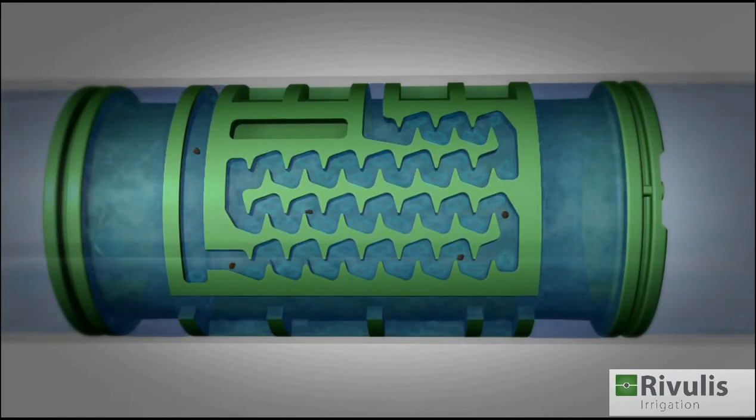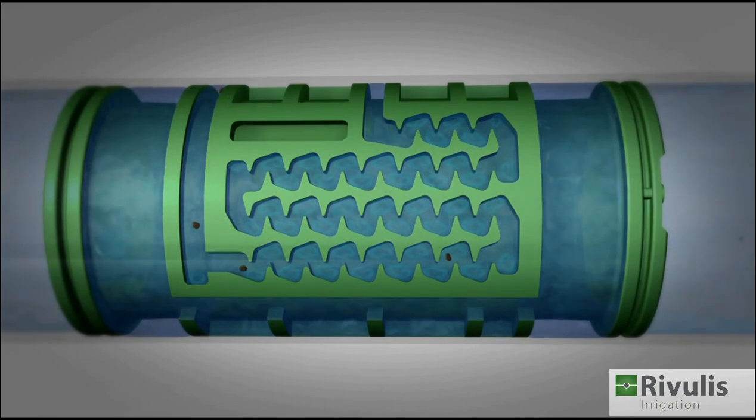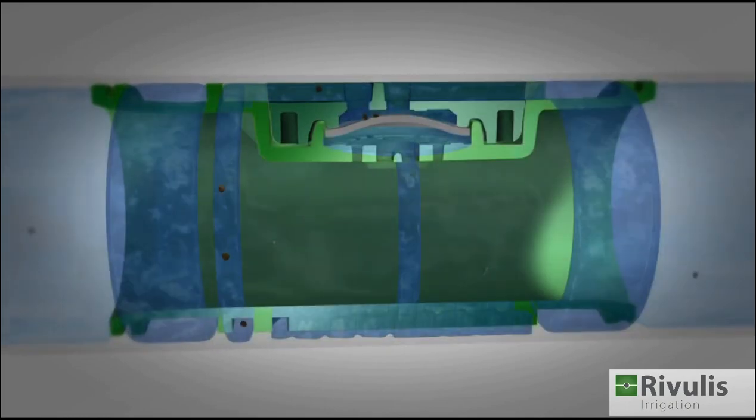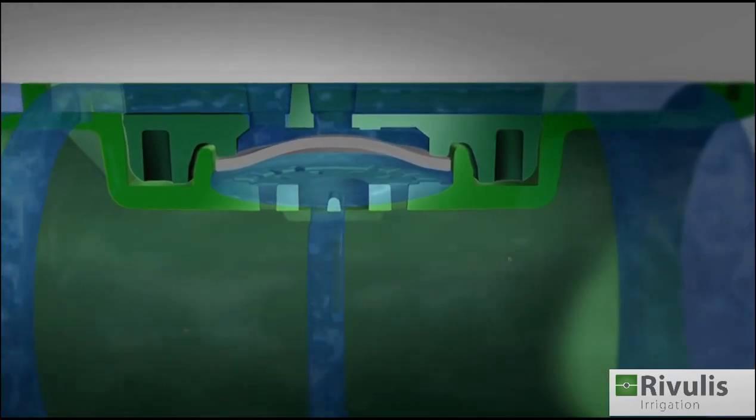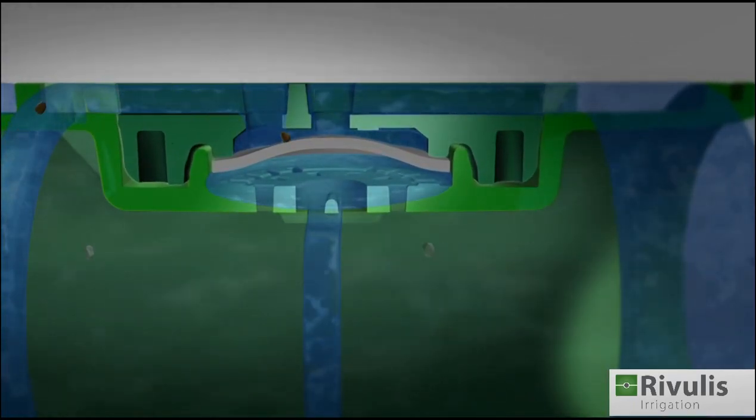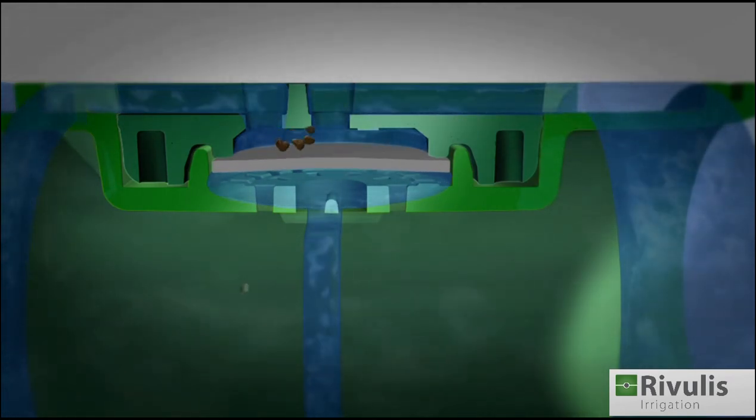The turbulent water flowing through the labyrinth carries the dirt particles with it. When particles accumulate in the regulating chamber, the self-cleaning mechanism kicks in. The decreased flow rate changes the pressure on the upper side of the diaphragm, pushing it down, expanding the path, and allowing the increased flow to flush out the particles.